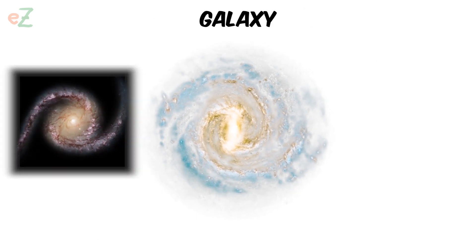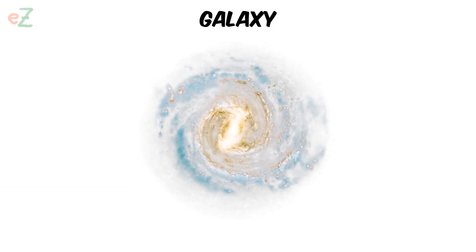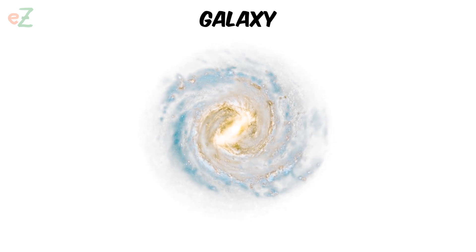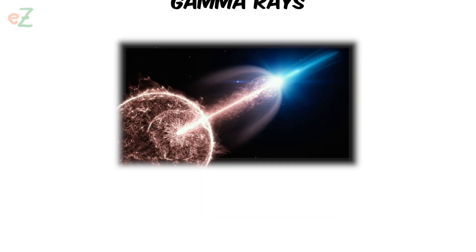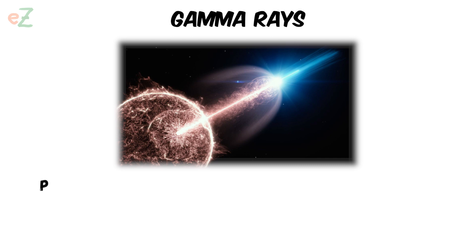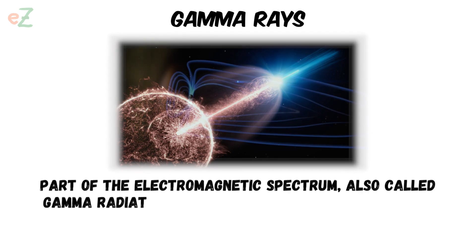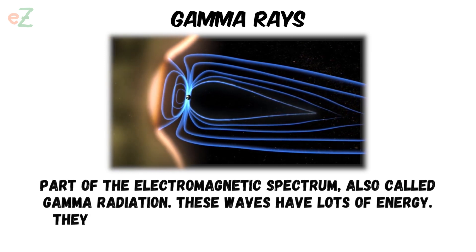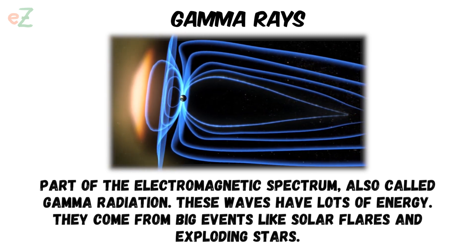Galaxy. A collection of thousands to billions of stars held together by gravity. The galaxy in which our earth and the solar system are located is called the Milky Way. Gamma rays. Part of the electromagnetic spectrum, also called gamma radiation. These waves have lots of energy. They come from big events like solar flares and exploding stars.